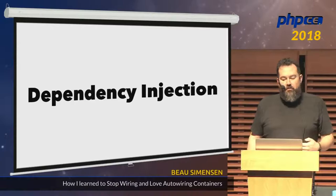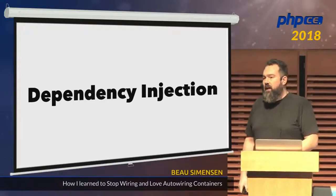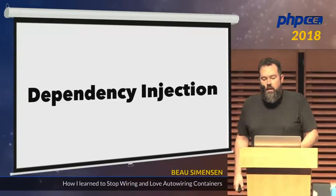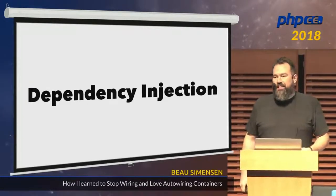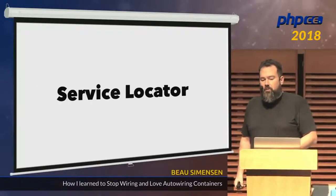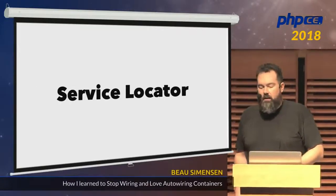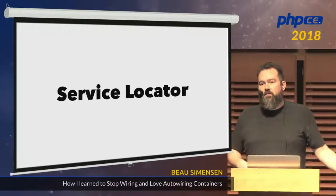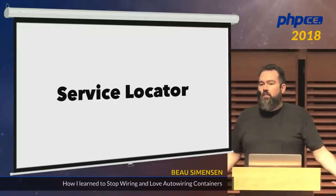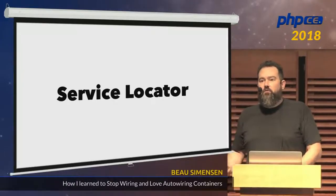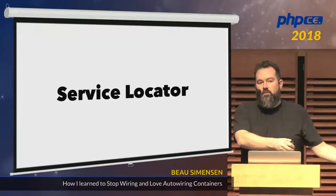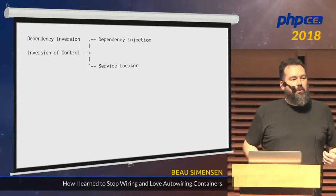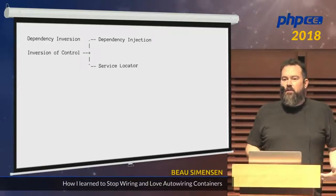Dependency injection is actually an implementation of inversion of control — it tries to resolve the dependencies for you and pass them to the service that needs them. There's another implementation called service locator, which is similar in that dependencies all come from one place, but in this case you go ask for them rather than having something pass them to you. So we have a lot of different words that all sort of look alike with subtly different meanings.